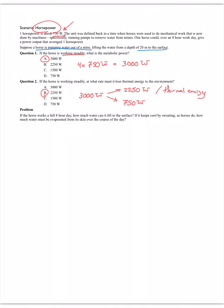The next question has two parts: if the horse works a full eight-hour day, how much water can it lift to the surface? And if it keeps cool by sweating, how much water must be evaporated? For preparation: eight hours equals 2.88 times 10 to the fourth seconds. The horse does 750 joules per second of useful work. Multiplying power by time gives the total work done.